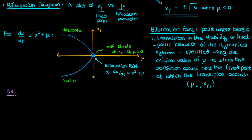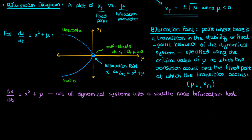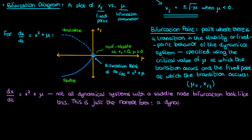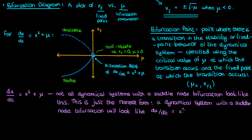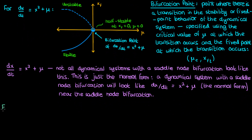The dynamical system dx/dt = x² + μ isn't the only one with a saddle-node bifurcation — it's the most basic one, called the normal form of the saddle-node bifurcation. What this means is that any dynamical system with a saddle-node bifurcation will look like dx/dt = x² + μ near the area of that bifurcation.